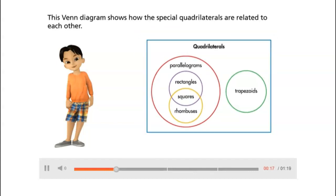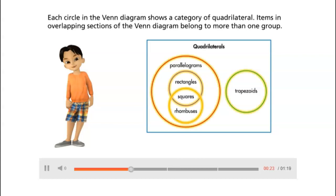This Venn diagram shows how the special quadrilaterals are related to each other. Each circle in the Venn diagram shows a category of quadrilateral. Items in overlapping sections of the Venn diagram belong to more than one group.